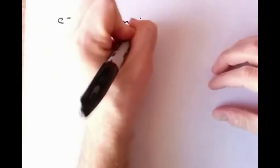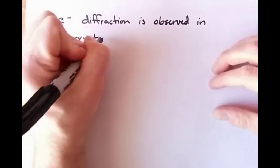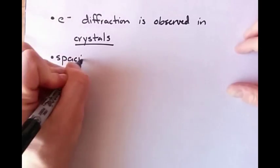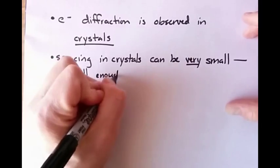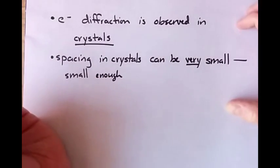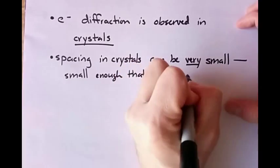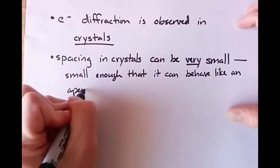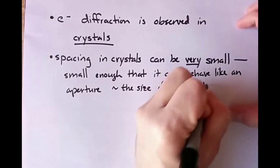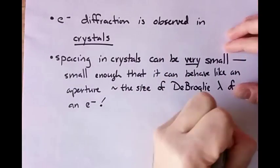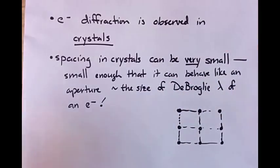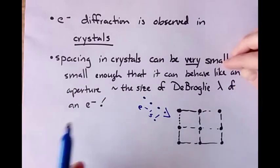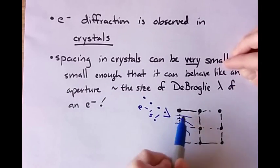But it can be observed. It can be observed in crystals, particularly. In crystals, the spacing between the atoms is very, very small. And it's small enough that the spacing between the atoms can behave kind of like an aperture on the order of the de Broglie wavelength of electrons. So if you shoot electrons into a crystal, then you can get diffraction of those electrons. And that opens up a whole world of electron crystallography, which we won't get into now. Look it up if you're interested.